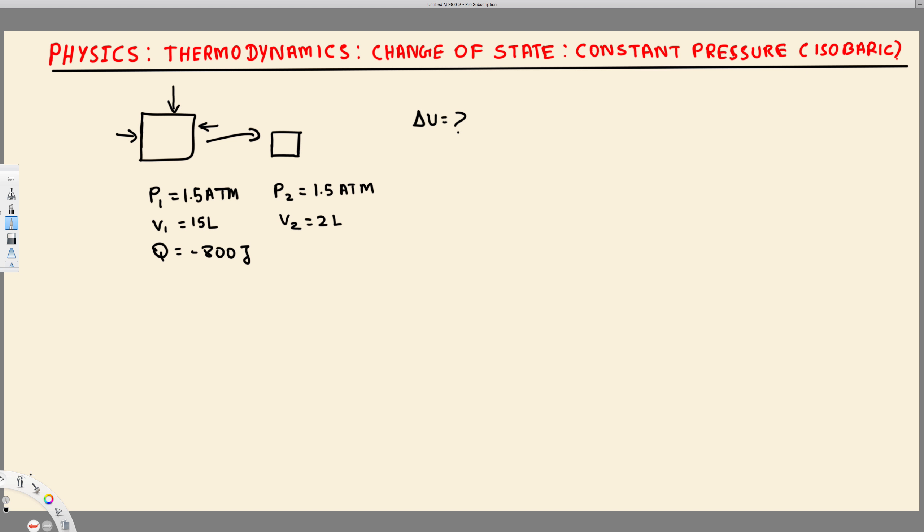Hey what's going on guys, let's do this problem right here. The question is asking to find the change in internal energy, delta U. Here if you see, the first system is compressed, and initial pressure is given 1.5 atm, final pressure also 1.5 atm. So since both of them have same pressure, that's an isobaric process.